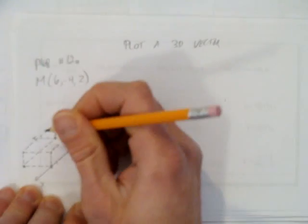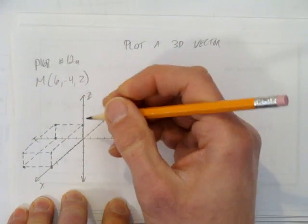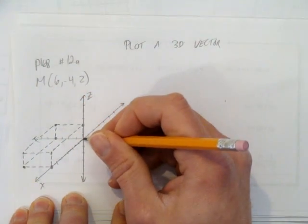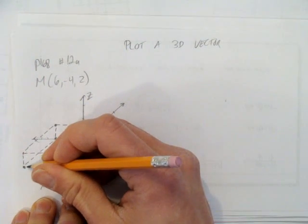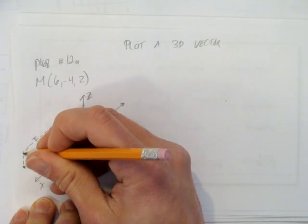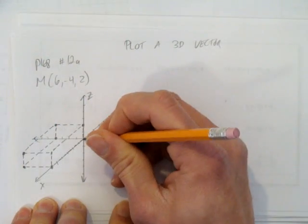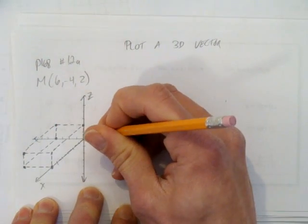Okay. We're almost there. All I need to do now is to draw my final vector, which goes 6 along x, negative 4 for the y, and up 2. So it ends up at this dot and starts here at the origin. We should probably label the origin with an O.